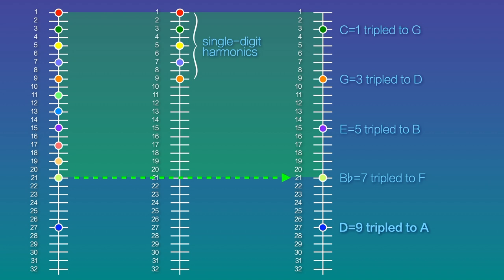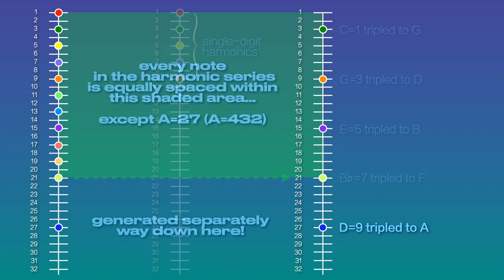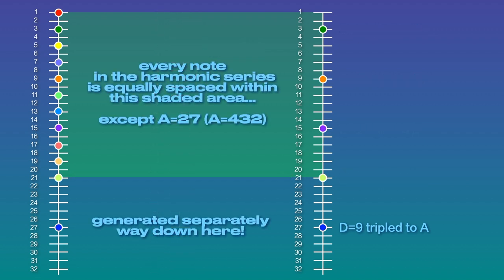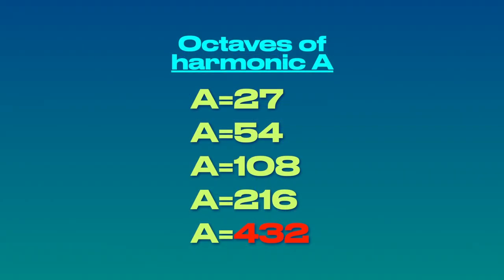When we triple the last single-digit harmonic of 9, we get A at 27, necessitating the phantom notes to fill the space around it. This last tripling of 9 is our focus here, because this is where A is generated at 27 — a value that scales up through its octaves to 432. A27 is the same as A54, A108, A216, and A432, because they're all octaves of harmonic A.